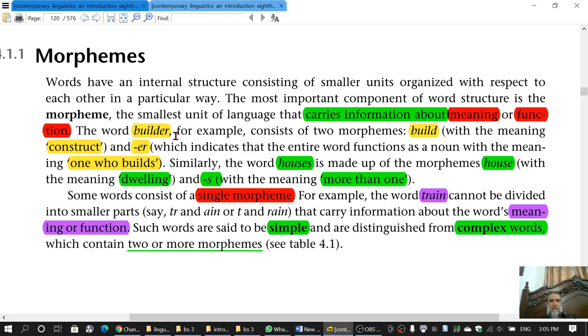The example given here is that of builder, in which the word builder is one morpheme. It carries information about meaning. The meaning is to construct, and ER indicates that the entire word functions as a noun. Therefore ER is performing the minimal unit of meaning or function. It has meaning and also performs some function.